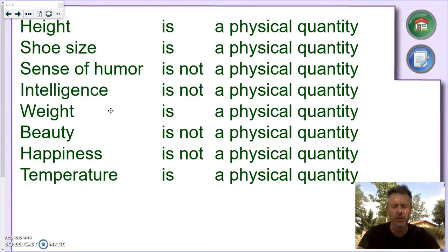Actually, as far as I'm concerned, intelligence is not something you can measure. Weight, you can measure with a bathroom scale. Beauty. Beauty is in the eye of the beholder. It's not something you can measure. Happiness. The level of your happiness is not something you can measure. And finally, temperature is a physical quantity, because it can be measured with a thermometer.